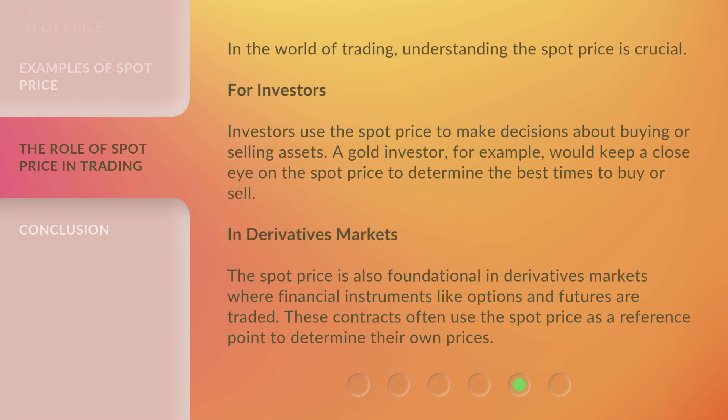In the world of trading, understanding the spot price is crucial. For investors, the spot price is used to make decisions about buying or selling assets. A gold investor, for example, would keep a close eye on the spot price to determine the best times to buy or sell. In derivatives markets, the spot price is also foundational, where financial instruments like options and futures are traded. These contracts often use the spot price as a reference point to determine their own prices.